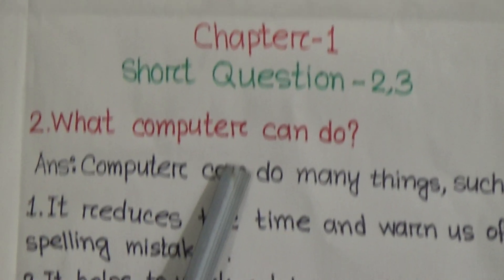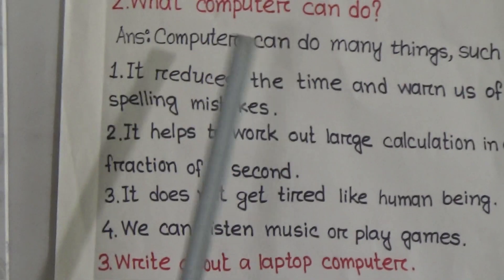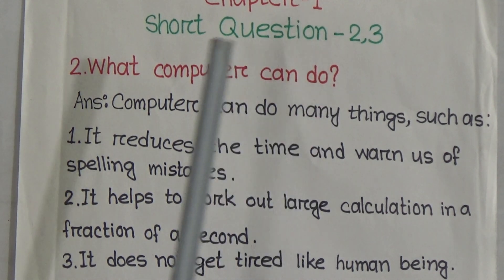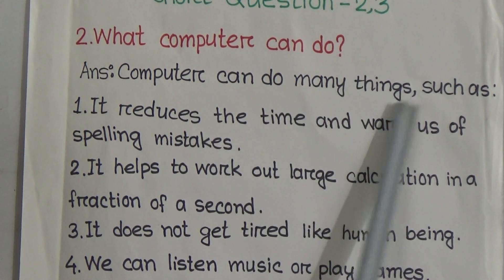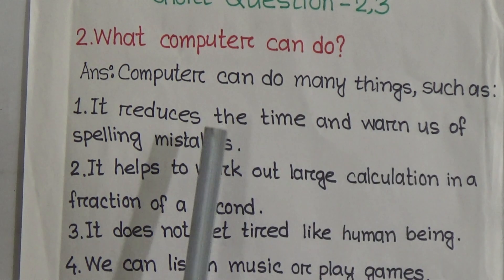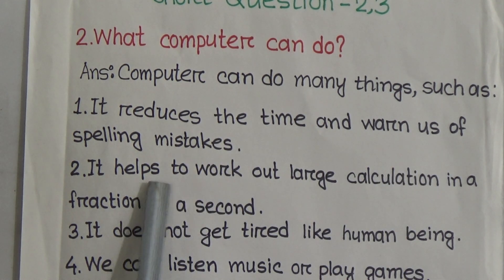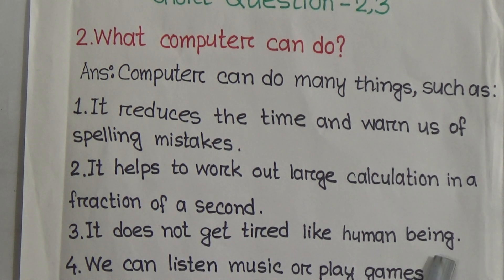In our first class we did short question one. Today we will do questions two and three. Question number two: what can a computer do? Answer: a computer can do many things such as — one, it reduces time and warns us of spelling mistakes; two, it helps work out large calculations in a fraction of a second; three, it does not get tired like a human being; four, we can listen to music or play games.